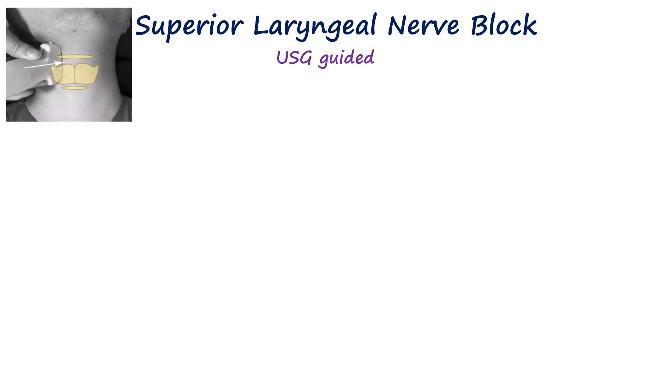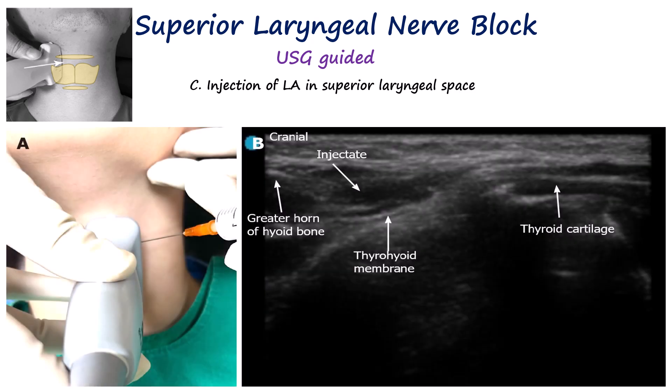After identifying these landmarks, a needle is inserted out of plane from anterior to posterior until we reach the plane just above the thyrohyoid membrane. Hydrodissection helps confirm the correct space. 1–2 ml of local anesthetic is injected into this space, called the superior laryngeal space, which lies between the hyoid bone above and the thyroid cartilage below, and is bounded anteriorly by the thyrohyoid muscle and posteriorly by the thyrohyoid membrane and pre-epiglottic space.